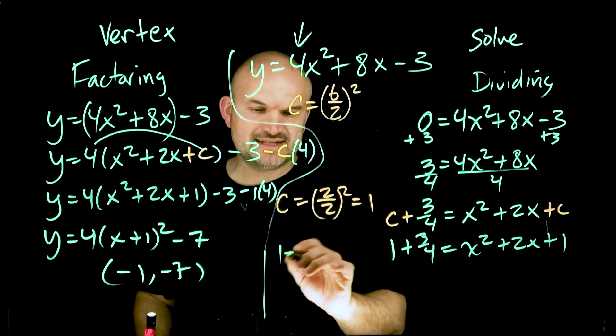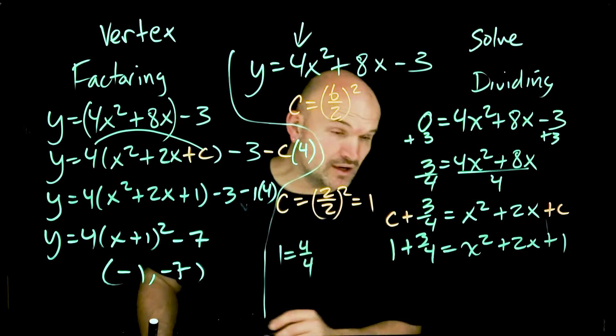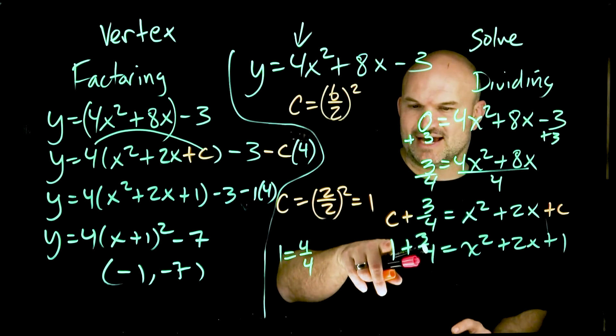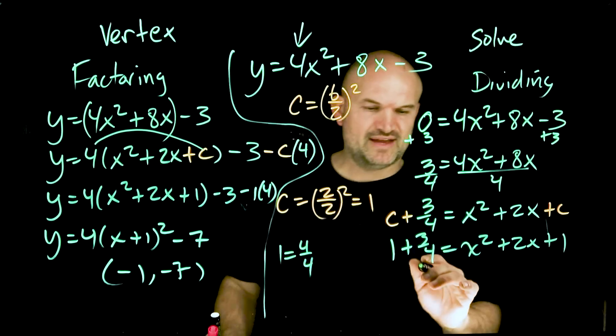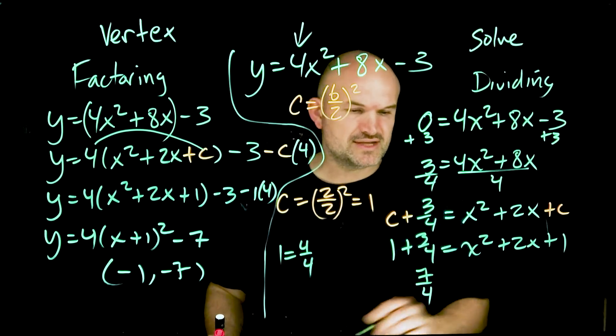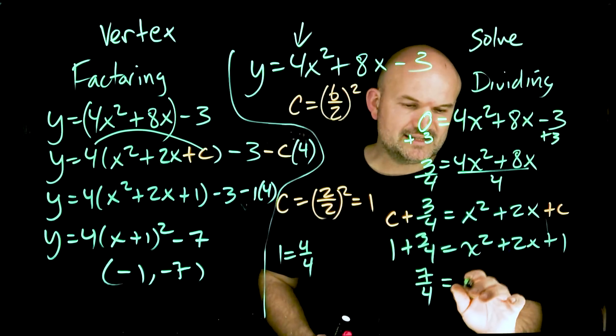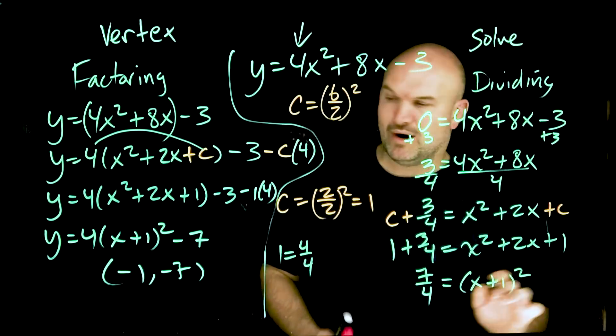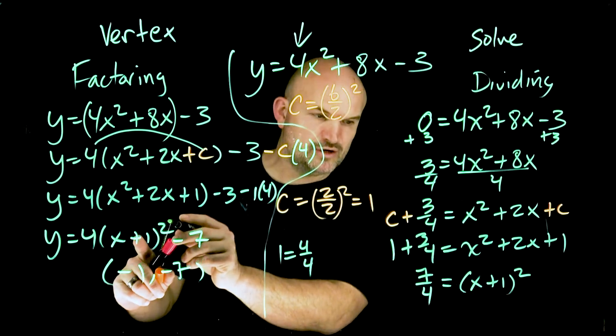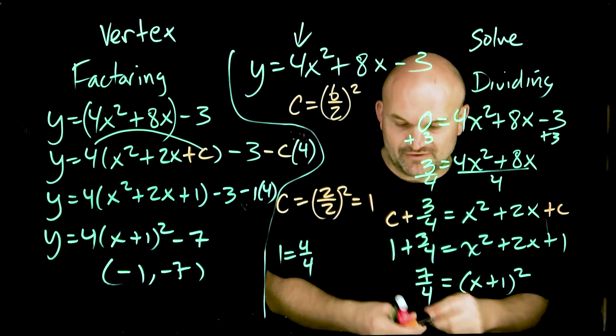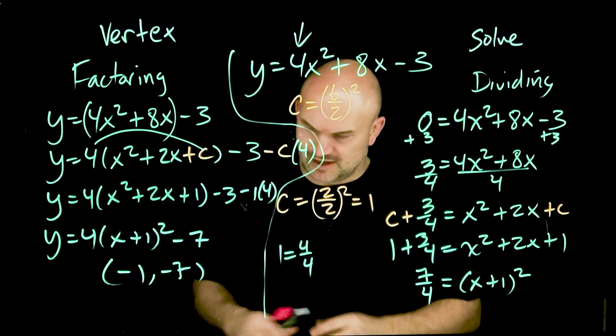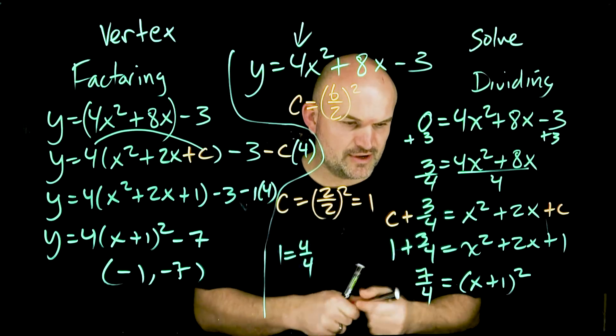Remember, one is the same thing as four over four. So therefore we could rewrite this as four over four. Therefore that's seven-fourths, and then over here we can rewrite this as x plus one quantity squared, which is exactly what we did over here. Now to solve this, I'm going to take the square root of both sides.